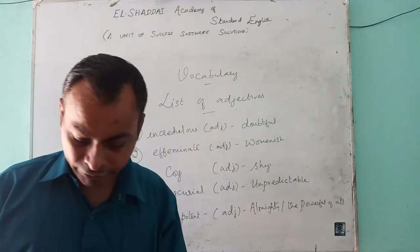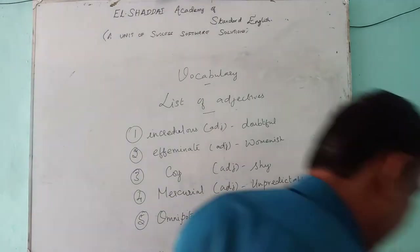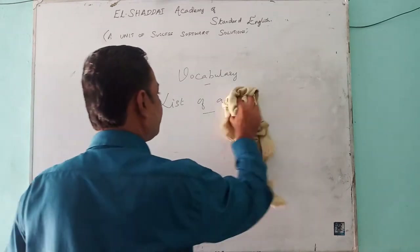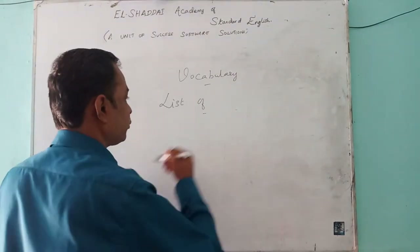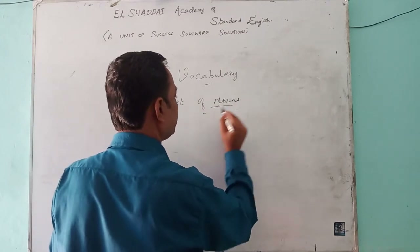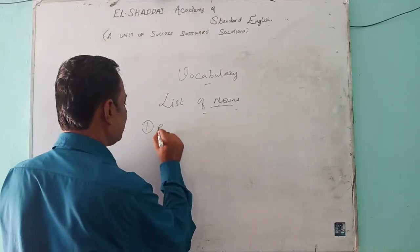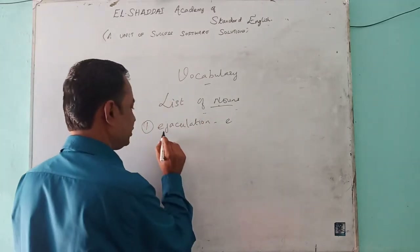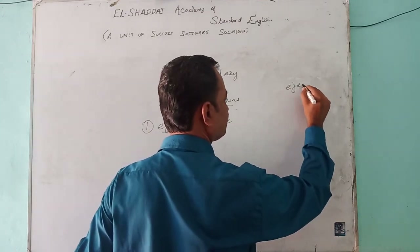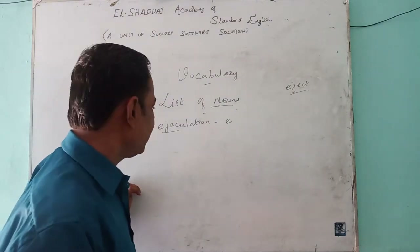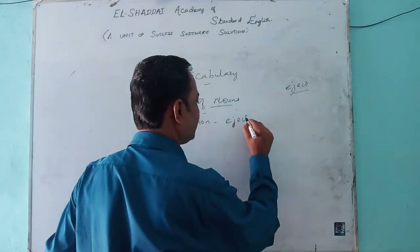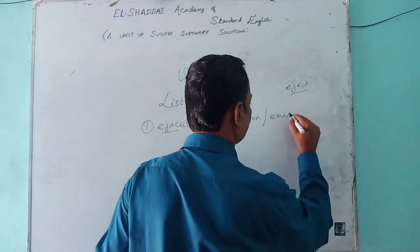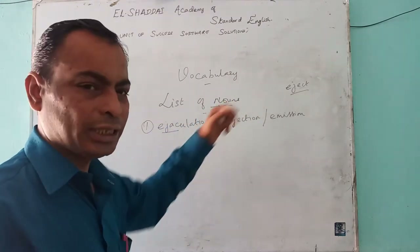So five adjectives I've given you. Now I'll give you the list of nouns — one sec, I'll just wipe it off. Right, so it should be easy for you. Okay, so the list of nouns. The first one is ejaculation, which means the ejecting of a word — ejection or emission.